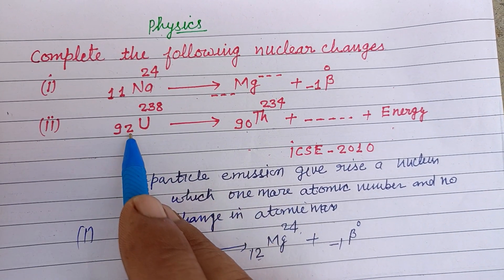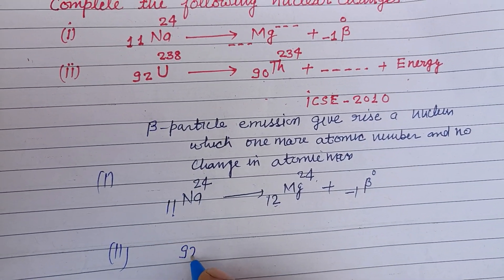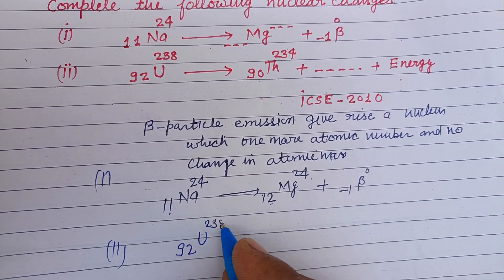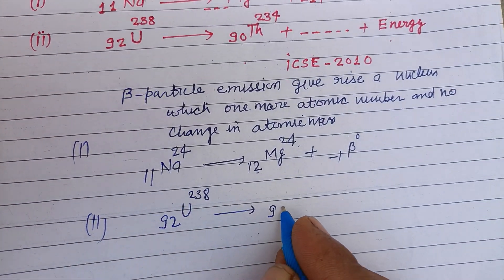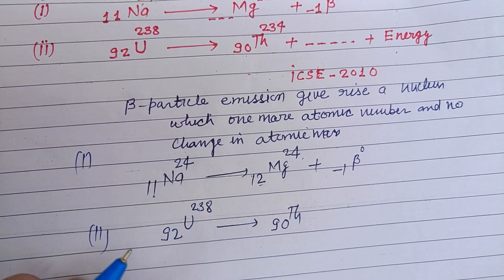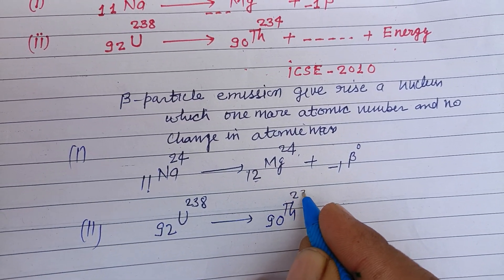Here it is 90, it is 92. So 92 uranium 238 gave rise to 90 thorium 234.